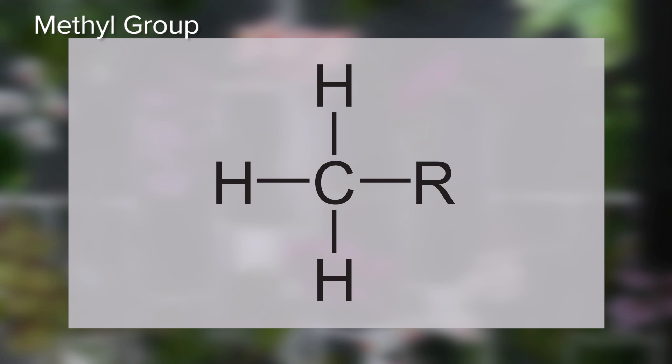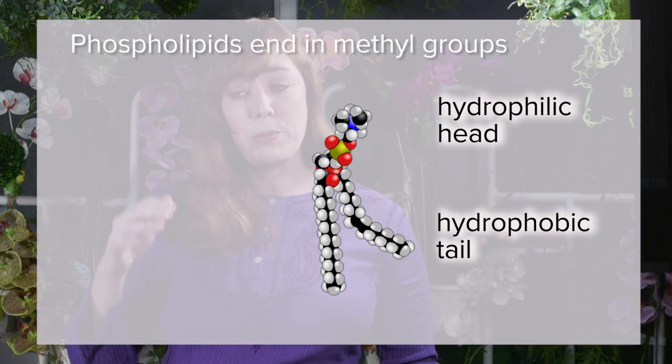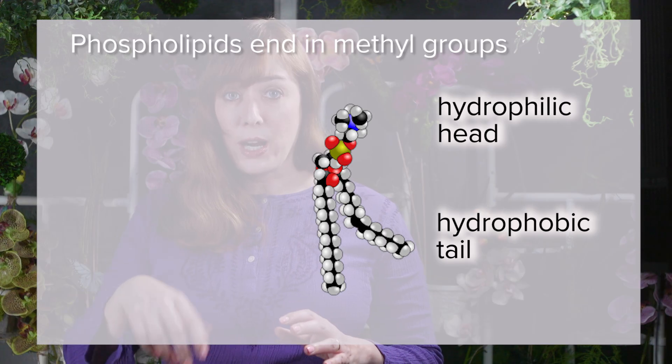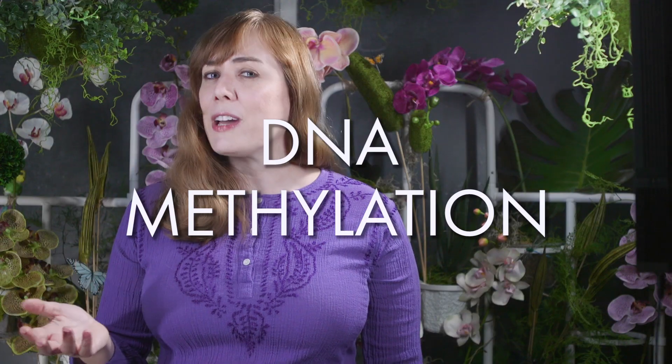The methyl group, CH3, is the one functional group we're going to see today that is hydrophobic. So if you see a patch of methyl groups on the surface of a biological molecule, that region is hydrophobic and will repel water. Think of molecules like phospholipids — the top part with a phosphate group is hydrophilic, but these tails, which are hydrophobic, end in methyl groups. Compared with these other groups, methyl is less reactive — it just sits there repelling water. However, you will see the function of various biological molecules modified by the addition or subtraction of a methyl group. For instance, you'll learn about the importance of DNA methylation and how that can affect gene expression.